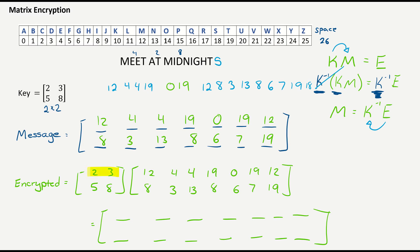So we take our first row, and we multiply it with our first column. And we get 2 times 12 is 24, plus 3 times 8, which is 24. So that gives me 48.